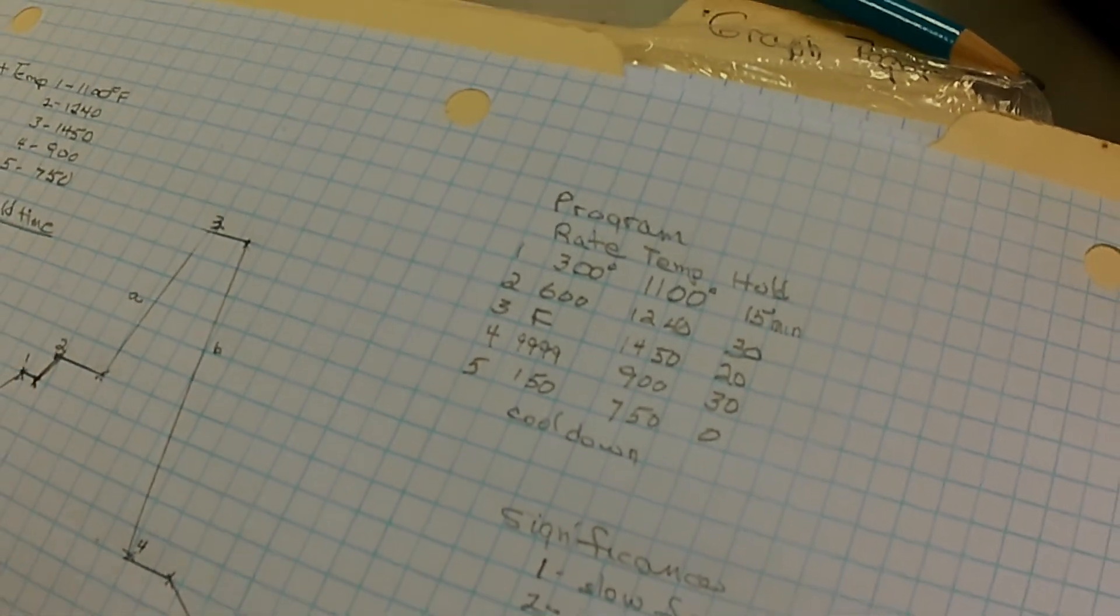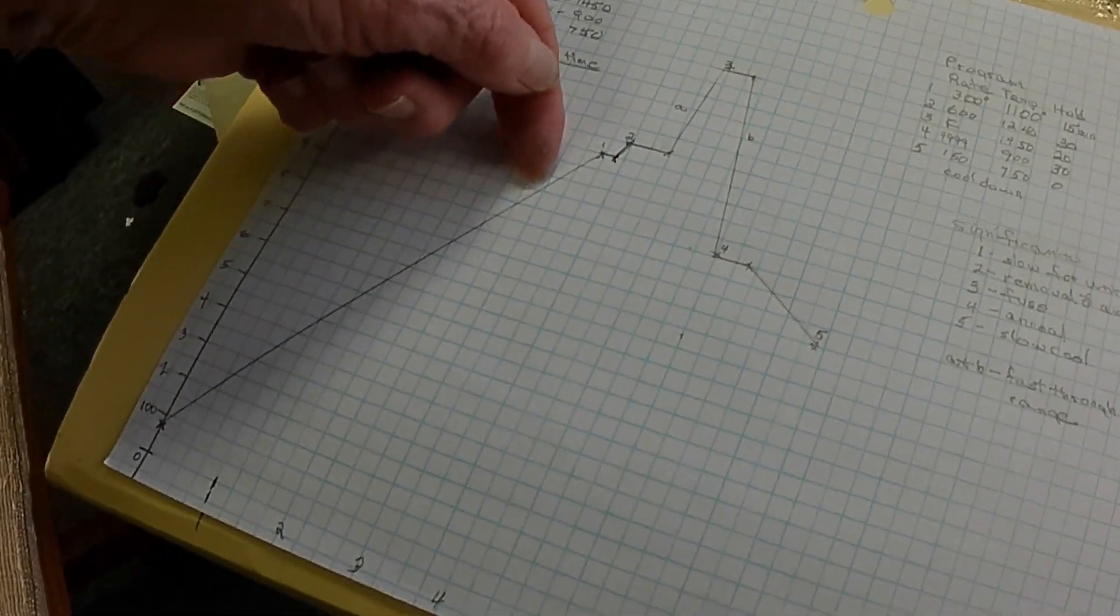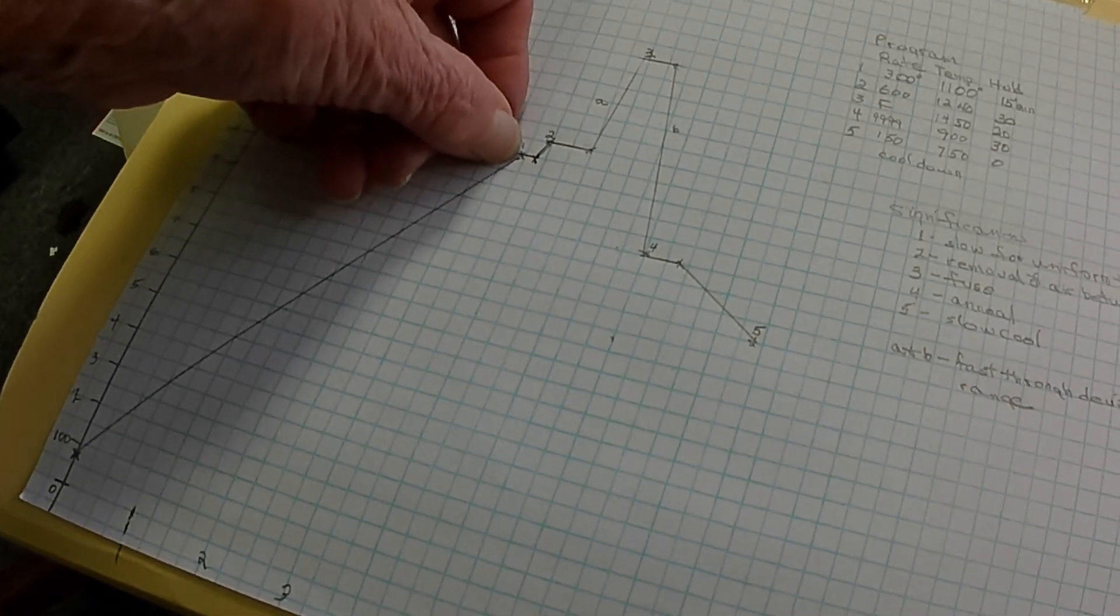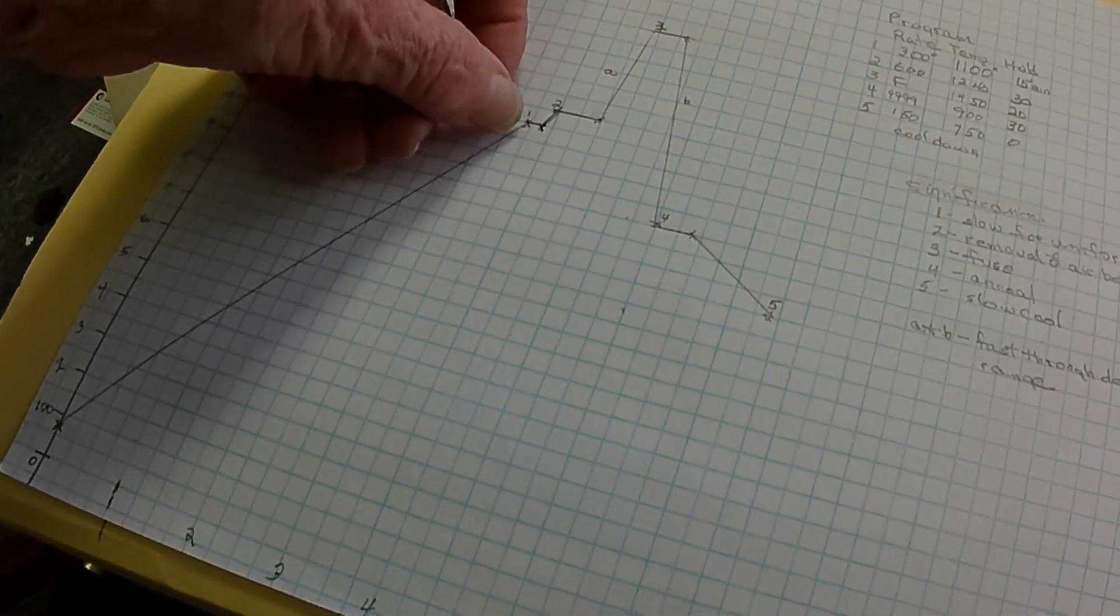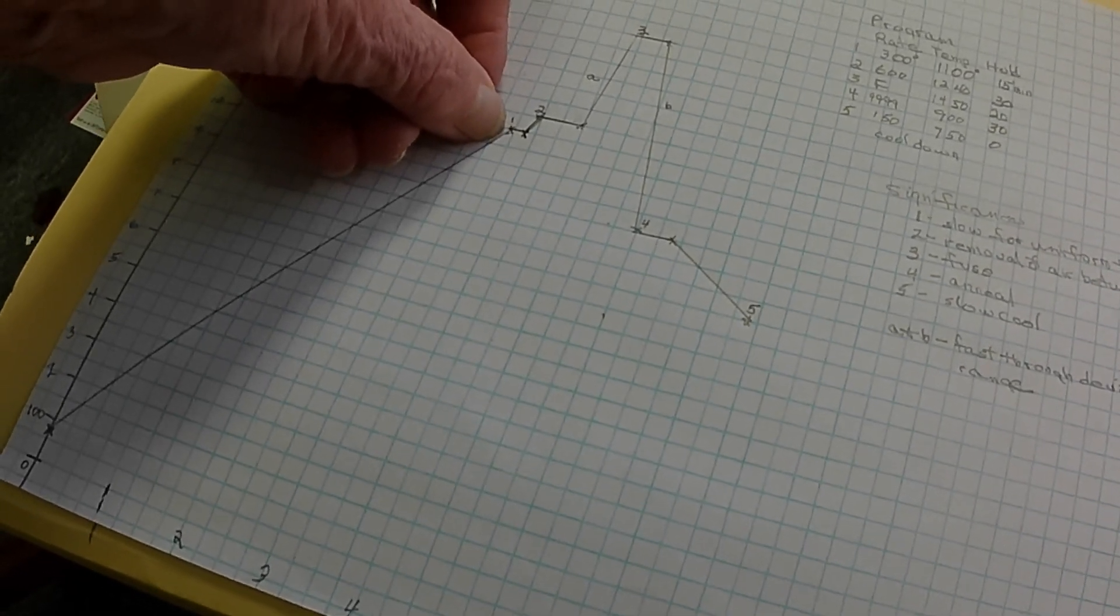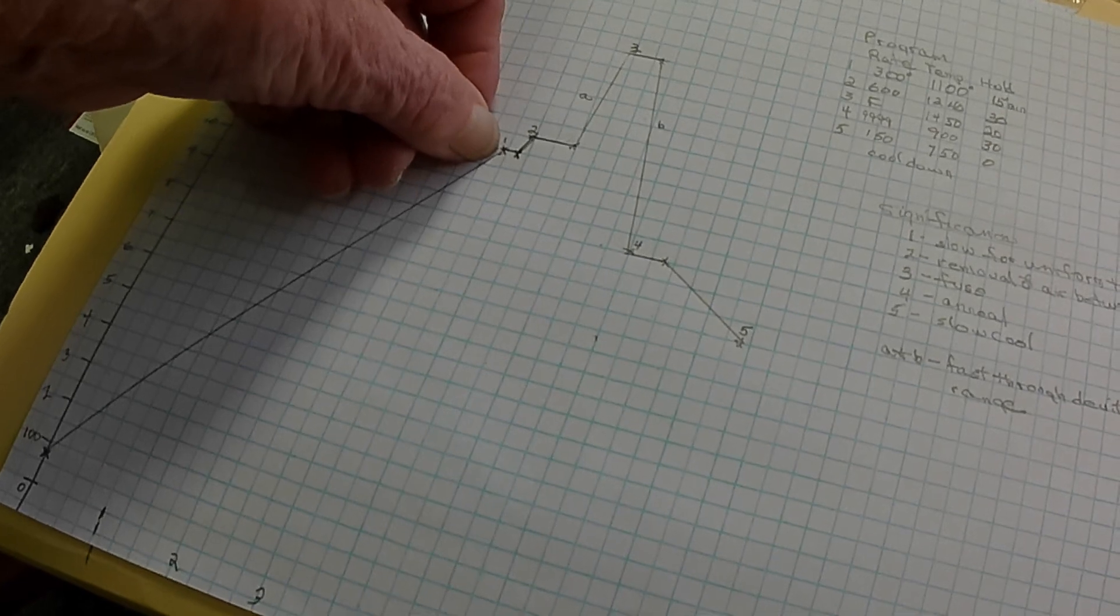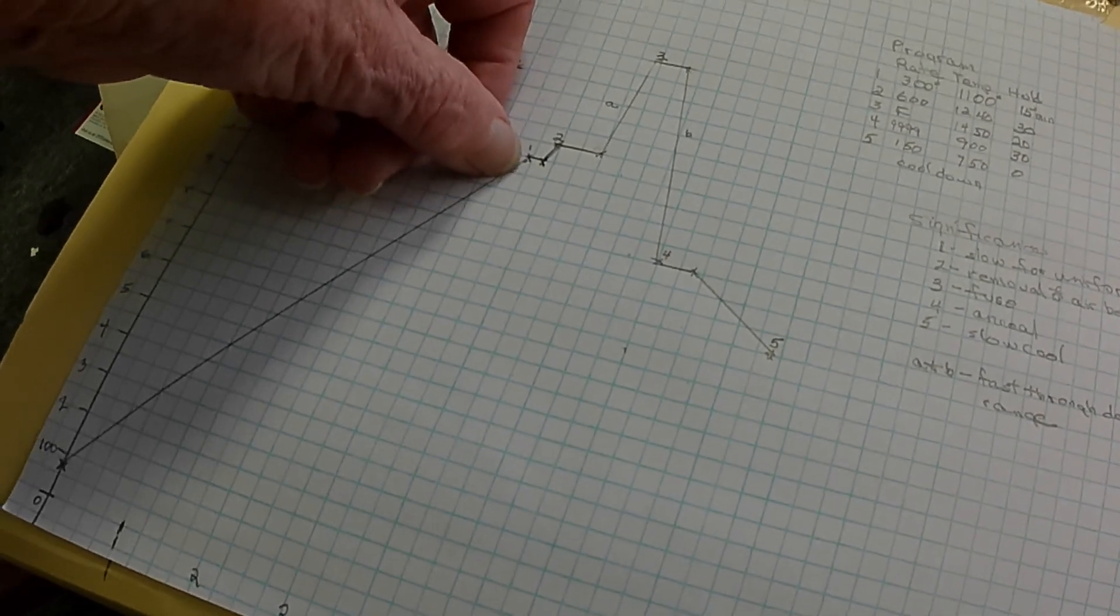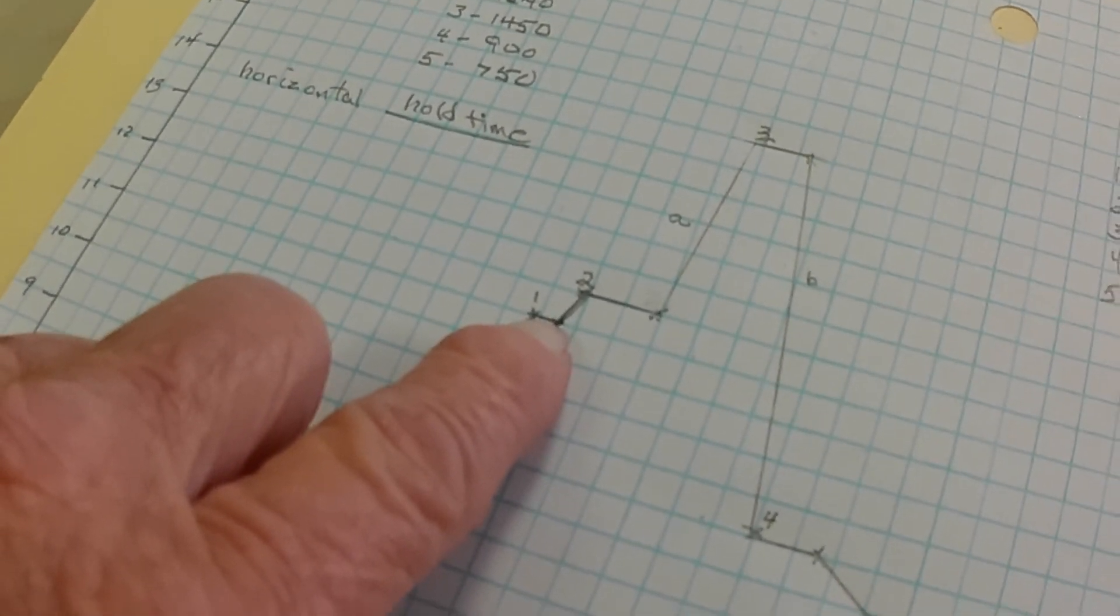Now significance. Step one, we increase gradually up to 1100. This step is important with big pieces because we want the piece to be at the same temperature all over. Small pieces, it's not so important. But if you're doing a large piece or if you have a kiln that only heats from the sides, we need to be sure that there's uniform temperature throughout the piece. Then we hold it here for 15 minutes.